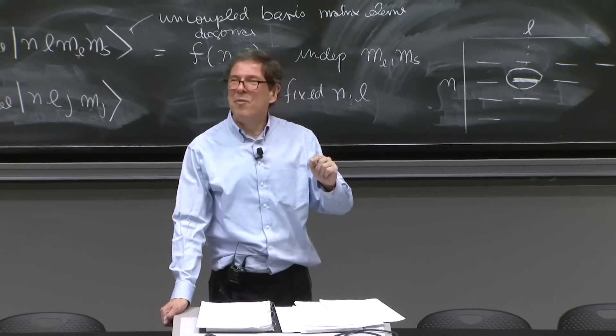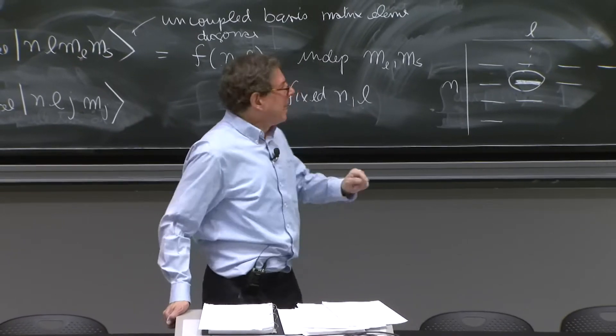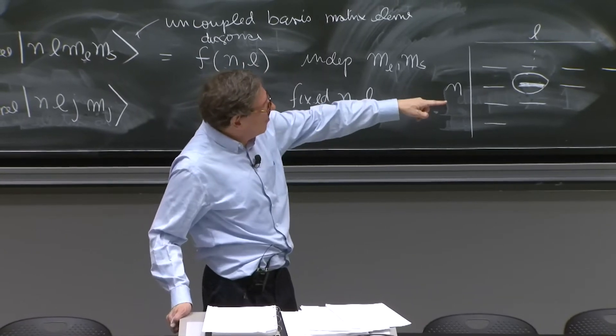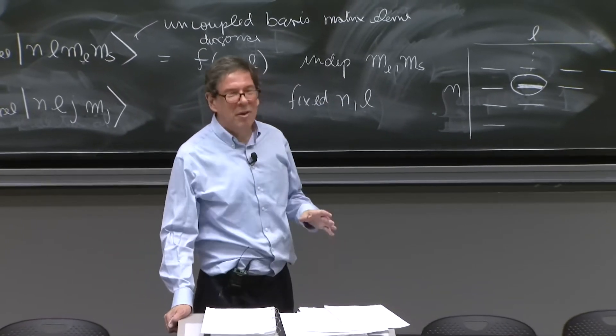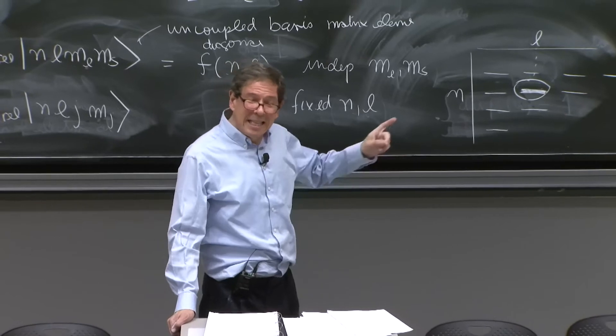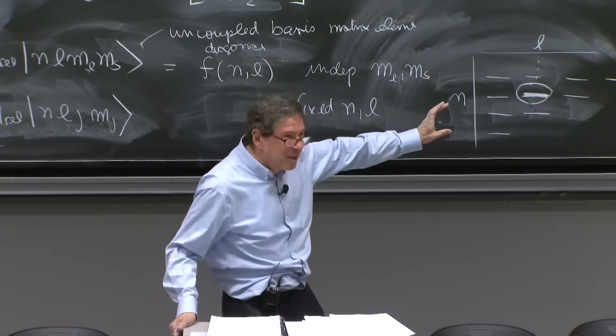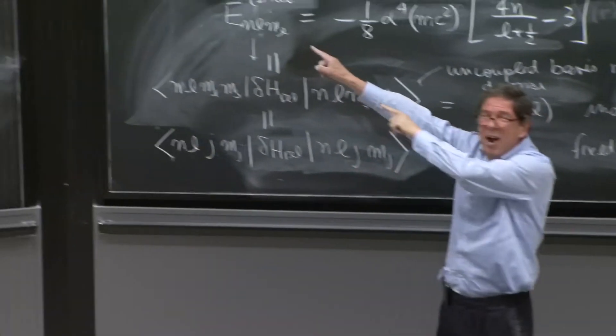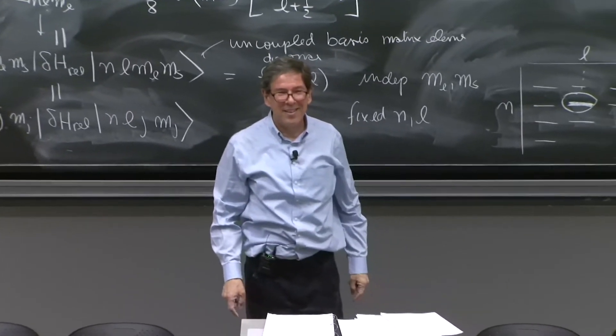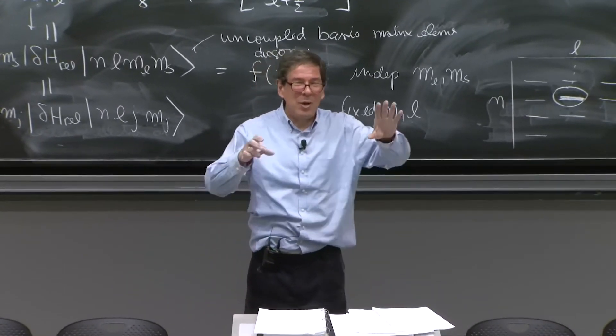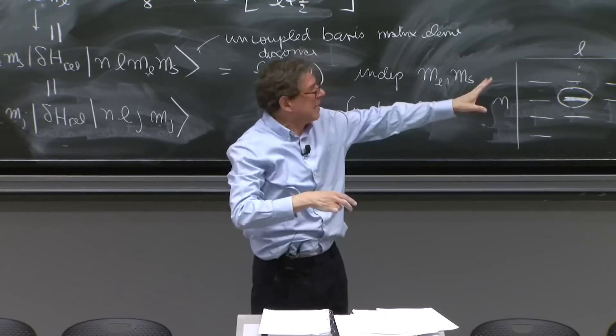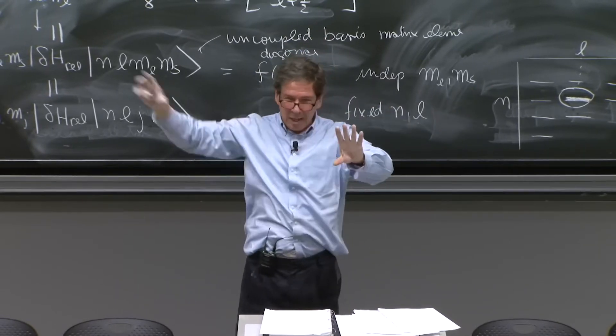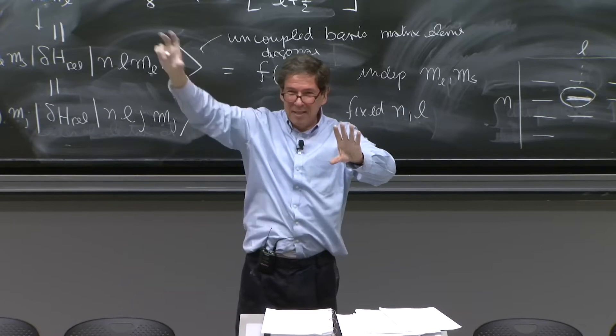But then something very funny happens. If you take a proper limit of this as l goes to 0, it gives you, for the spin orbit result, the same thing as the Darwin result. So for l equals 0, the spin orbit limit is actually the same as the Darwin.